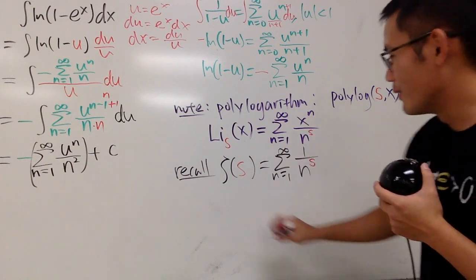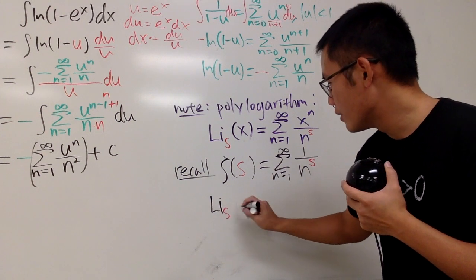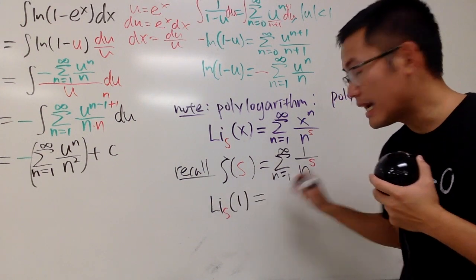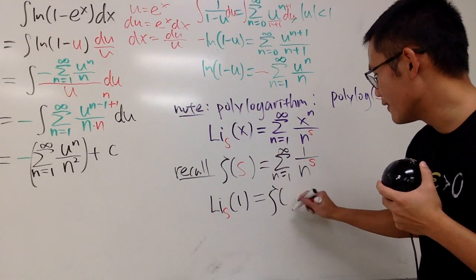It's just when x is equal to 1, isn't it? So, let me just put down this right here for you guys. Yes, we know that li s of 1, this is nicely equal to the Riemann zeta function.